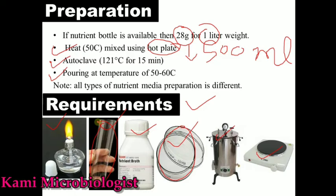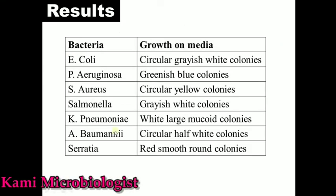The preparation differs based on the type: for nutrient broth, no agar is required. For semi-solid, half percent agar is used. For nutrient agar, full agar (15 grams per liter) is used. That is all about nutrient agar preparation and requirements.